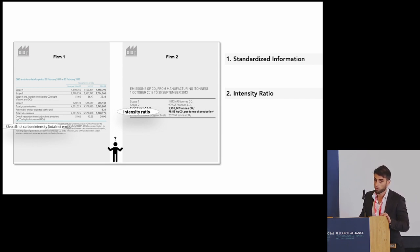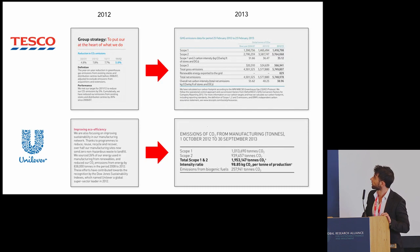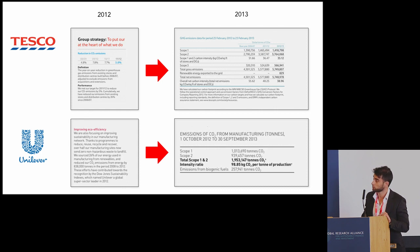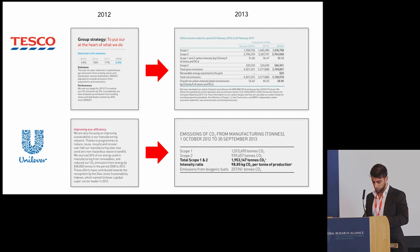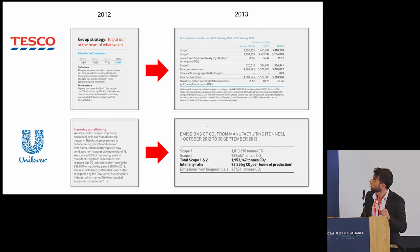My point is that these four screenshots all come from the financial reports of two firms: Tesco and Unilever. The only difference is one year. In 2012 we have non-standardized information, while in 2013 we have standardized information.